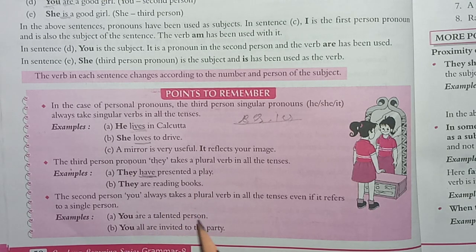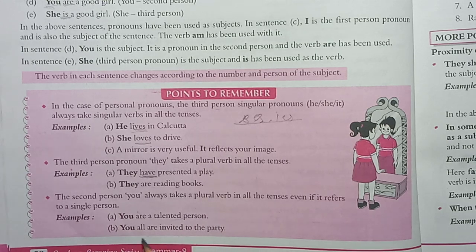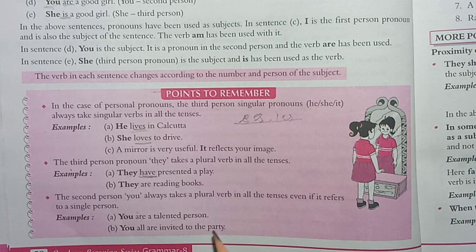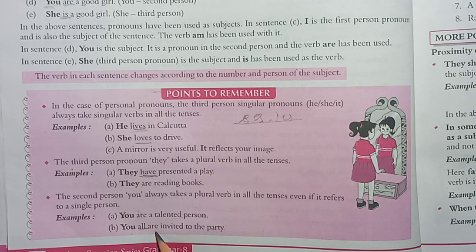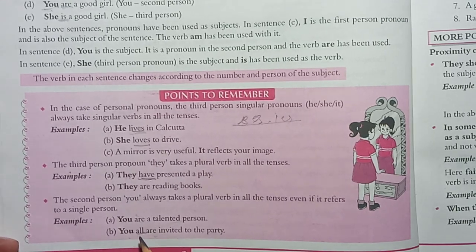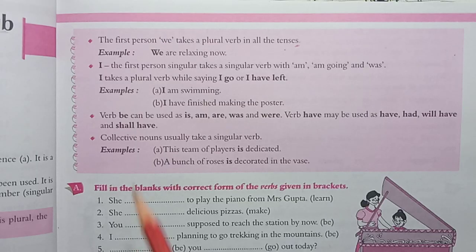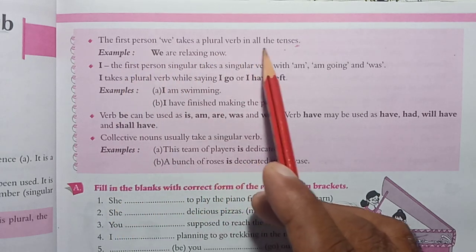For example: 'You are a talented person' — here 'you' refers to one person, but 'are' is used. 'You all are invited to the party' — here 'you' refers to many people, but still 'are' is used. So always use a plural verb with 'you'.